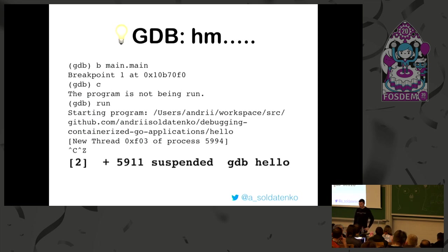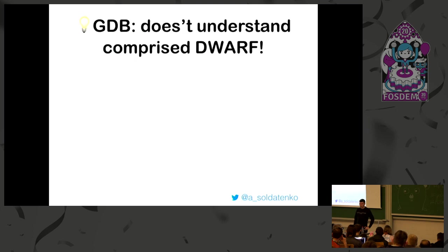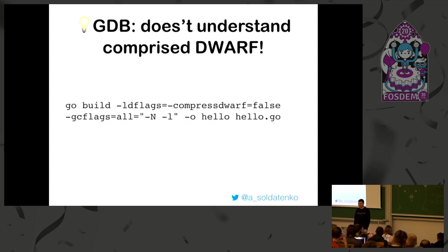Let's think about what's wrong. GDB, since a certain version, doesn't understand that Go build compresses DWARF information to reduce binary size. That's why you need to rebuild with '-gcflags=compressdwarf=false'. And then it will work.